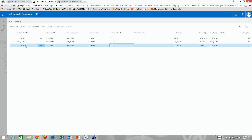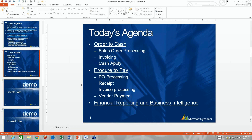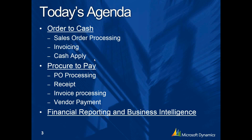I should note: this demo system date is February 16th, 2018. Going into the John Haddock customer record and looking at payments received this year, I can see that little payment we just processed. Very simple to receive a payment. To review: we covered sales order processing, invoicing, and applying cash — the things that occupy most of a small business day.